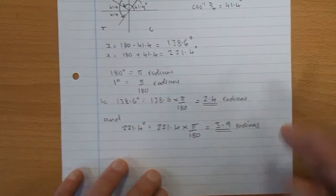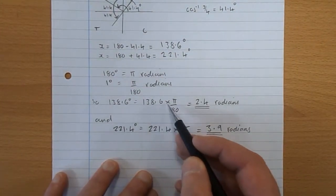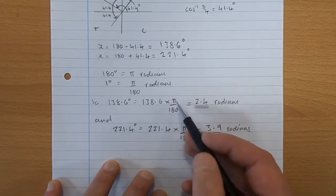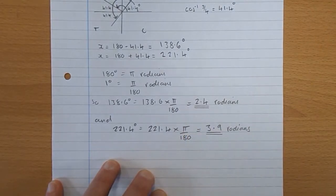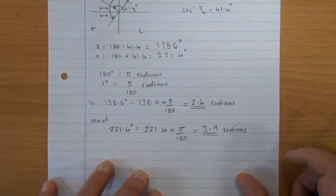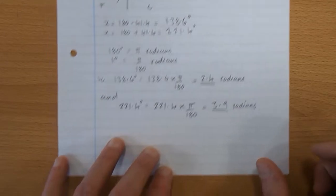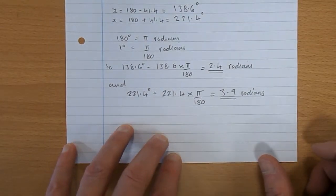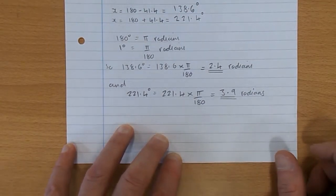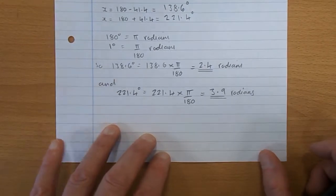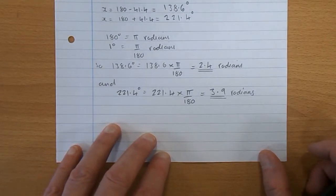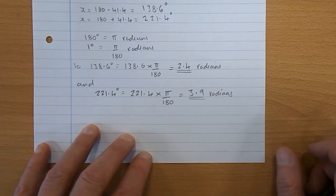.6 degrees? That's going to be 138.6 times what 1 degree was, π over 180. Use your π button if you want. 138.6 times π divided by 180 gives you 2.4 radians. And the other solution we got in degrees was 221.4. Times that by π, then divide it by 180, and you get 3.9 radians.